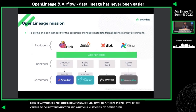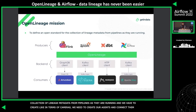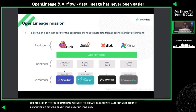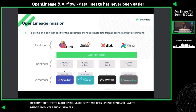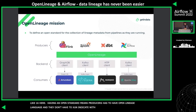That's what OpenLineage is about — our mission is to define an open standard for the collection of lineage metadata from pipelines as they run. We create agents and connect them into producers like Flink jobs, Spark jobs, dbt jobs, and Apache Airflow to extract information directly. Having an open standard is a great benefit: producers need to speak the open language, consumers need to understand it, but producers don't need to communicate directly with consumers — OpenLineage is the abstraction layer in between, avoiding an N-squared integration problem.